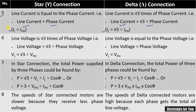Now let us talk about voltages. In case of star connection, line voltage is root three times the phase voltage. In case of delta connection, line voltage equals phase voltage. So in star connection, line current and phase currents are equal, whereas in delta connection, line voltage and phase voltages are equal.